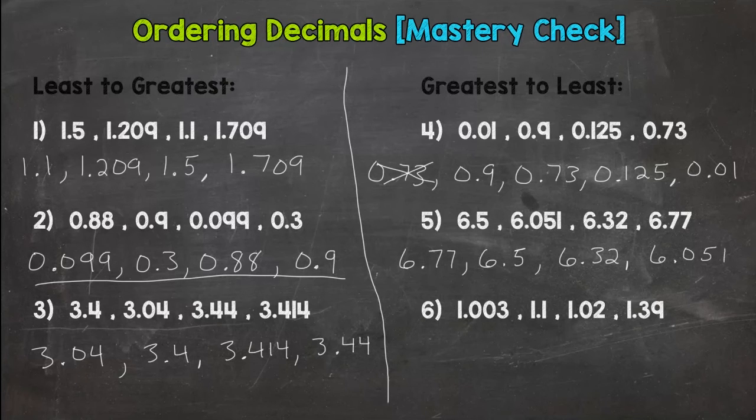And then lastly, greatest we should have 1.39, 1.1, 1.02, and then 1.003.